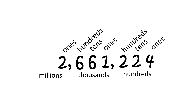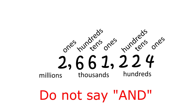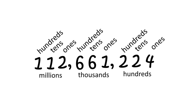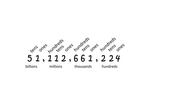And always put a comma after 3 digits. Let's read this number correctly — do not say the word "and" when reading it. We have 2,661,224. And this system of placing number values continues on and on. After million, we get billions, and then trillions, etc.